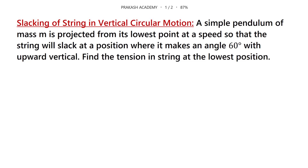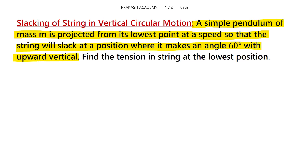So this problem says: a simple pendulum of mass M is projected from its lowest point at a speed so that the string will slack at a position where it makes an angle of 60 degrees with the upward vertical. We have to find the tension in the string at the lowest position.